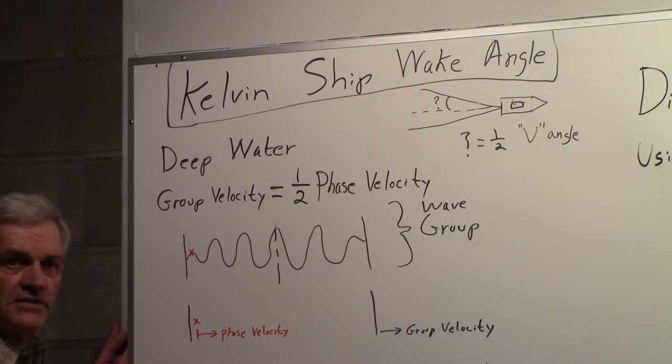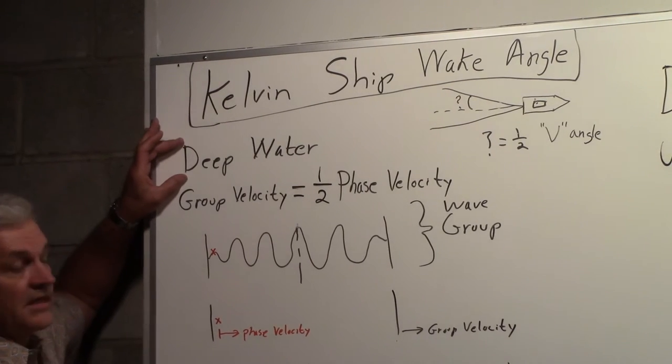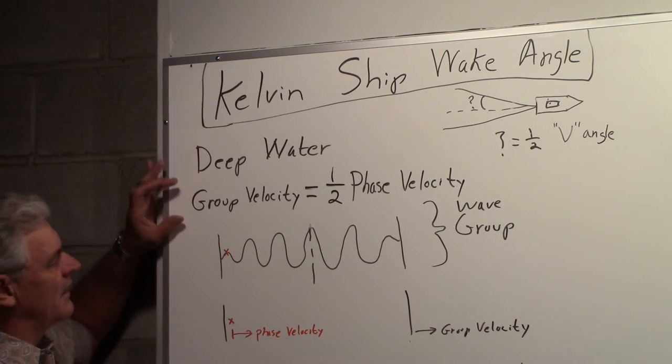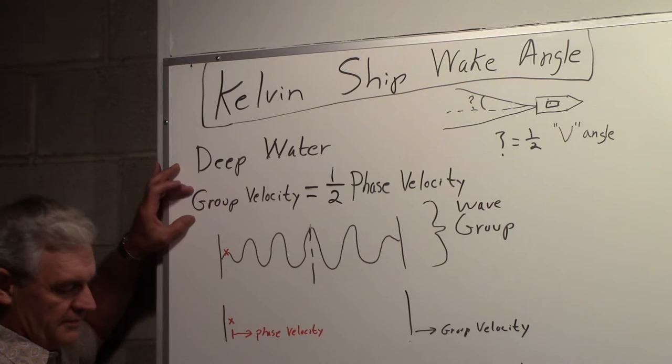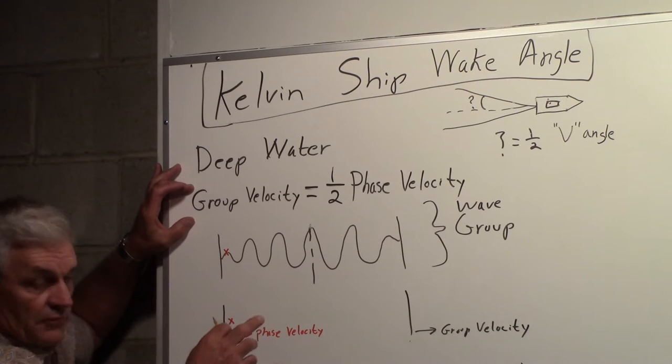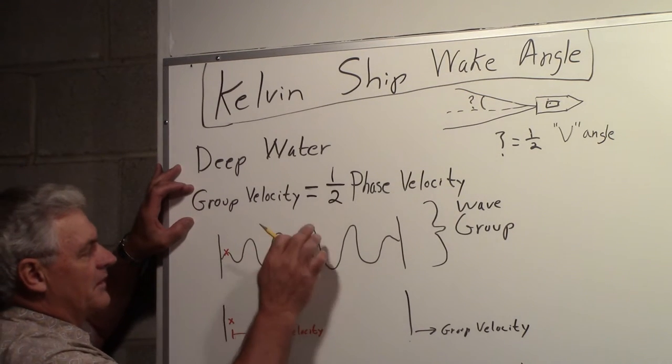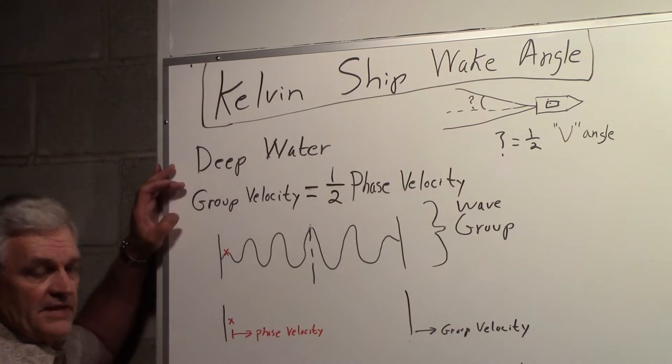Now to do this, we're going to assume that we're in conditions of deep water. Deep water means that there's two water velocities involved: a group velocity, which we'll get into here in a second, and a phase velocity. The group velocity is one half the phase velocity.